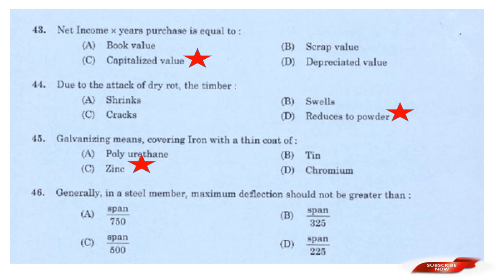Question: Generally, in a steel member maximum deflection should not be greater than? Options: Span by 750; Span by 325; Span by 500; Span by 325. Answer: Option B — Span divided by 325.